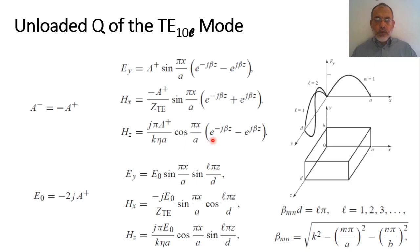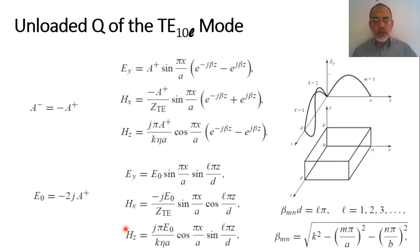Finally, HZ is proportional to sin(Lπz/D) and equals j·(π/a)·E₀/(k·η·a) multiplied by cos(πx/a) multiplied by sin(Lπz/D). This is the complete field distribution inside a rectangular waveguide cavity operating in the TE10L mode, where 1 is the value of M, N is 0 (so no variation in the y-direction), and L gives the variation along z.